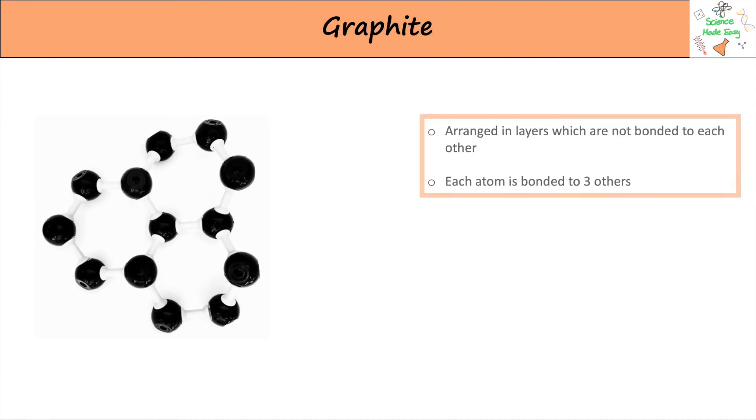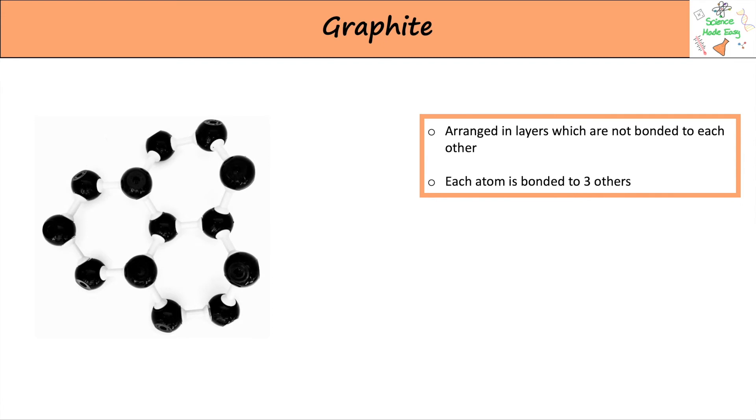Graphite is arranged in layers. The atoms in the layers are bonding to each other however the layers are not. This means graphite can be used as a lubricant as the layers can slide over each other.